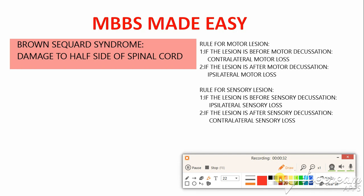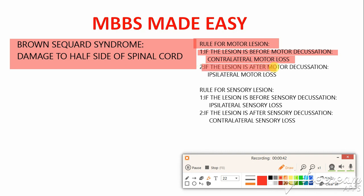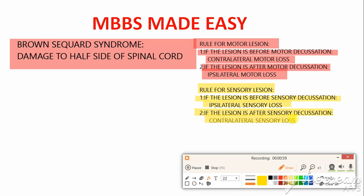Before going into detail, I'd like you to remember this rule. Rule for motor lesion: if the lesion is before motor decussation, you will see contralateral motor loss. But if the lesion is after motor decussation, you will see ipsilateral motor loss. Similarly, rule for sensory lesion: if the lesion is before sensory decussation, you will see ipsilateral sensory loss, and if the lesion is after sensory decussation, you will see contralateral sensory loss.